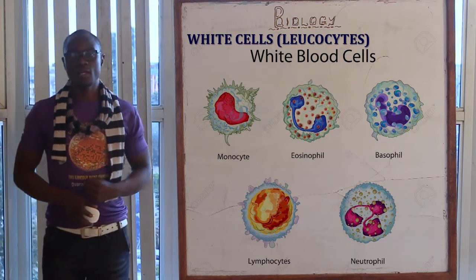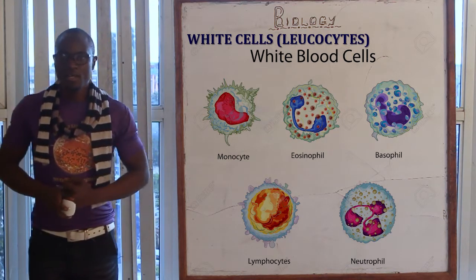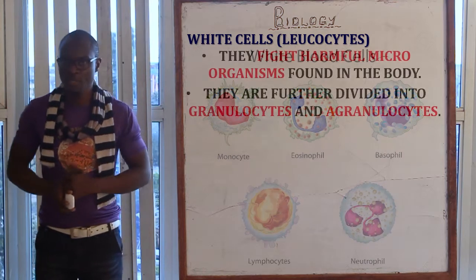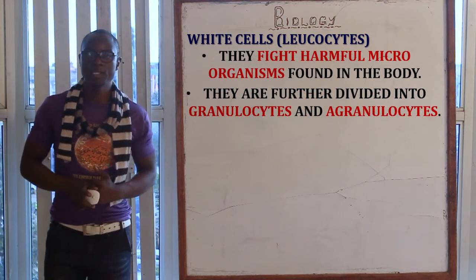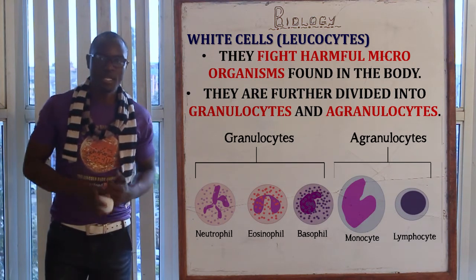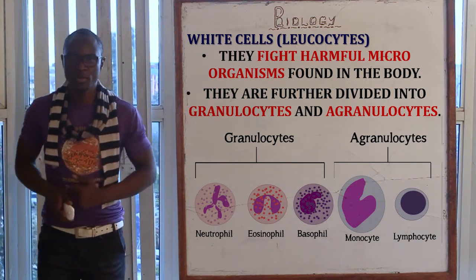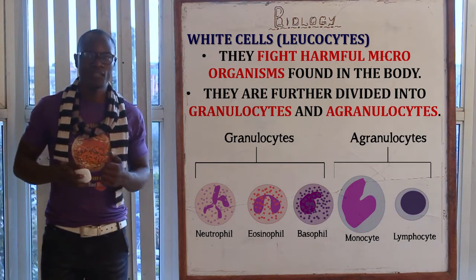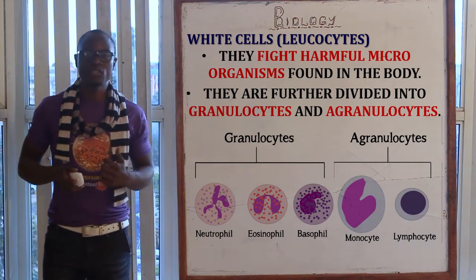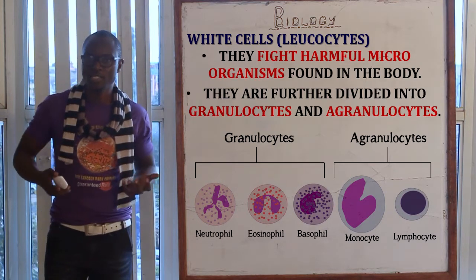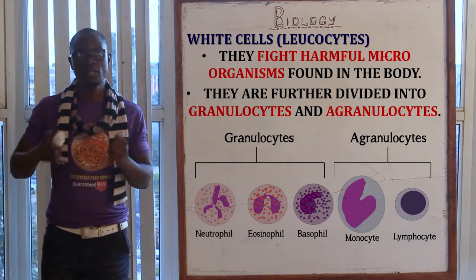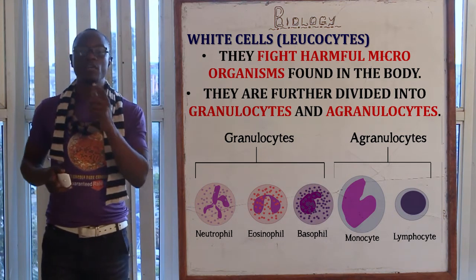Let's now look at the white blood cell. The white blood cell can also be called leukocytes, and they are mainly responsible for fighting harmful microorganisms in the body. The white blood cells are further divided into granulocytes and agranulocytes. The granulocytes mainly have a granular nucleus and move like the amoeba, and may move out of the capillaries to engulf bacteria located inside the tissue. The granulocytes mainly comprise basophils, eosinophils, and neutrophils.